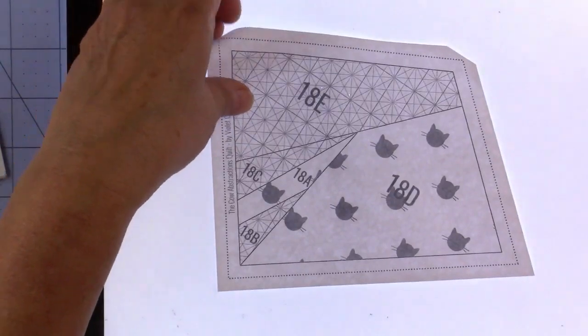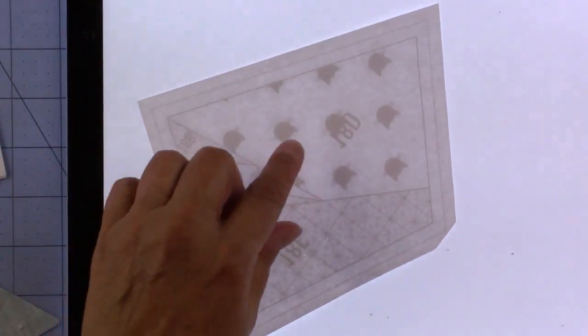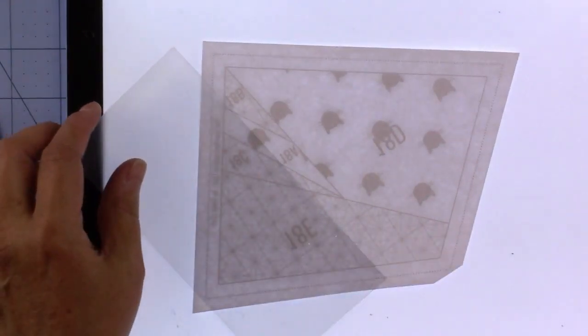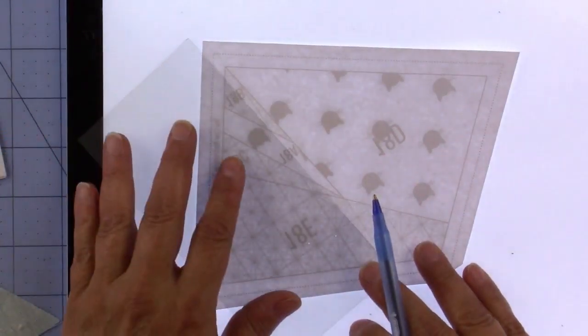We're going to turn each unit over and transfer the stitching lines to the back of the paper. This will help later when we're trying to place the fabric before we stitch.